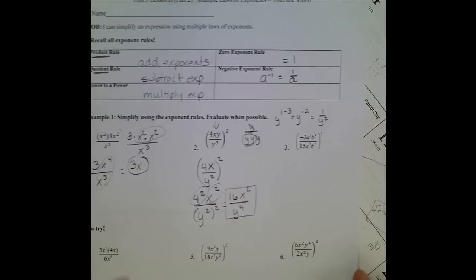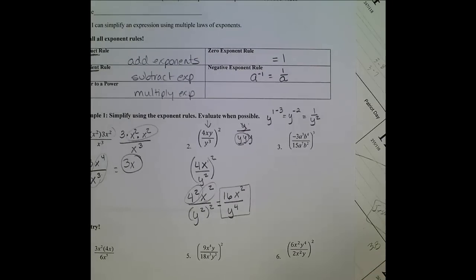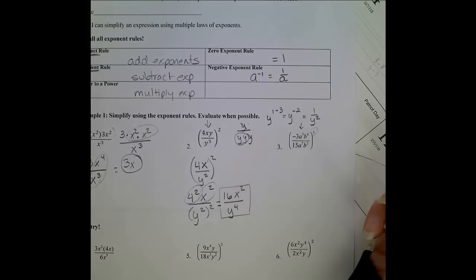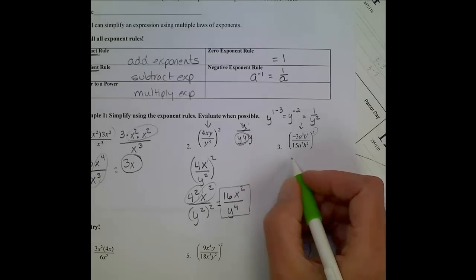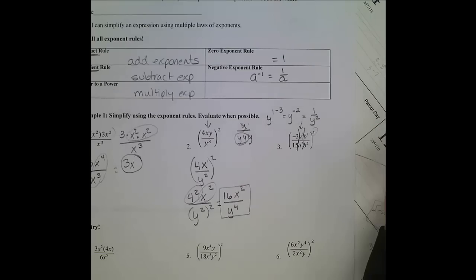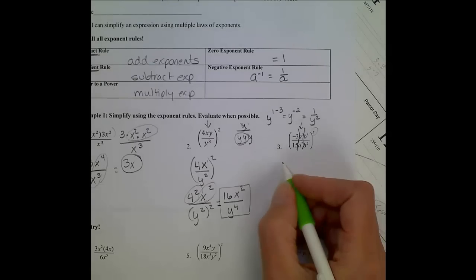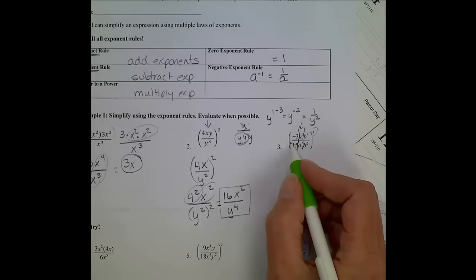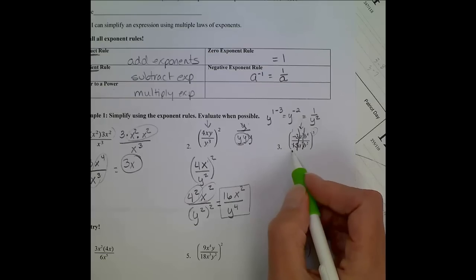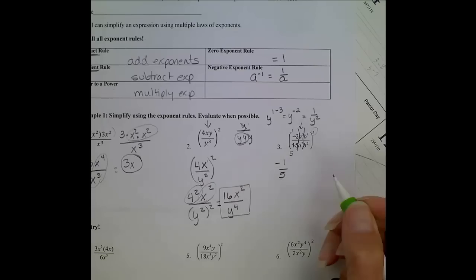Number three — there is a lot going on here. Again, I would first simplify the inside before worrying about the exponent on the outside. Sometimes I'll draw lines between like terms to help me focus. Negative three over fifteen: three goes into fifteen five times, so three reduces to one and fifteen reduces to five. Before things get too messy, I'm going to do a quick rewrite of one over five.